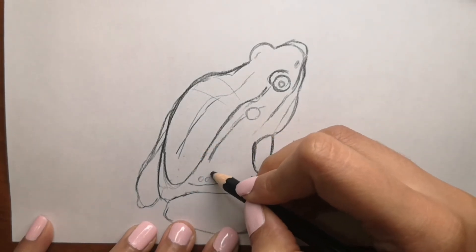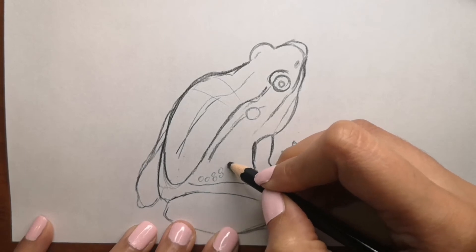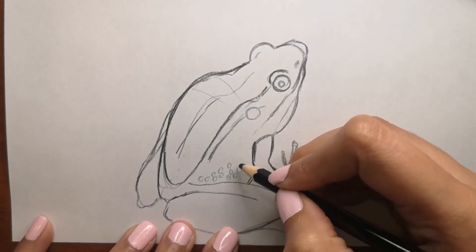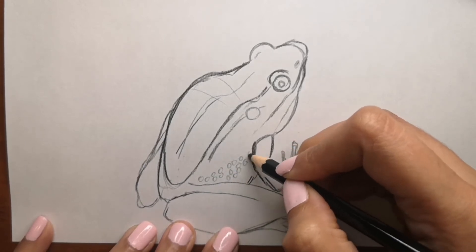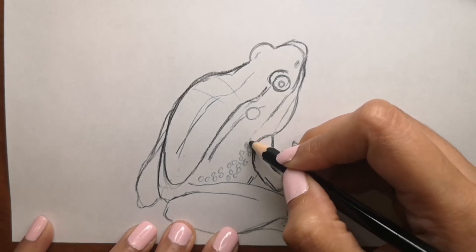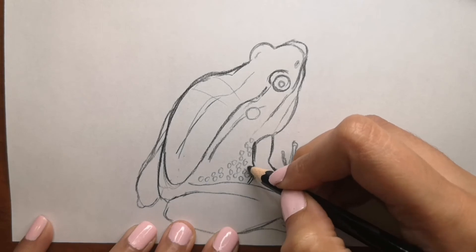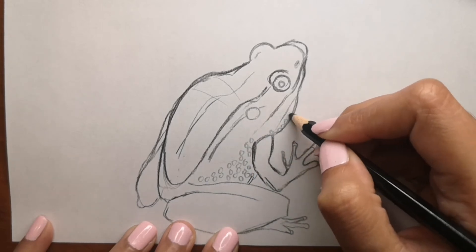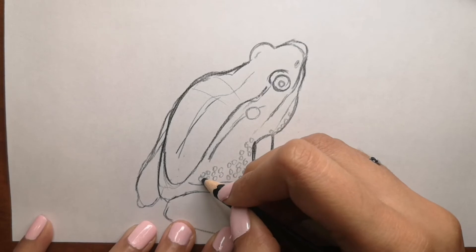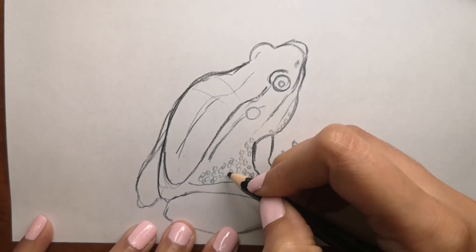If the tympanum is larger than the frog's eye, it is a male. If it is smaller, it is a female. It's interesting.